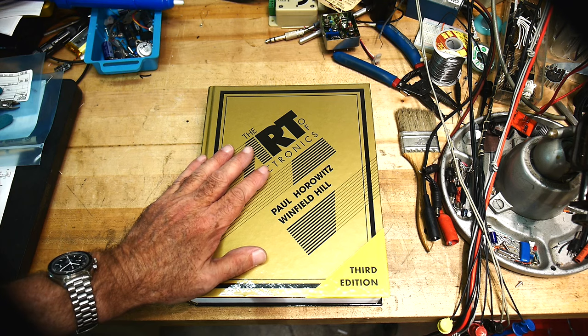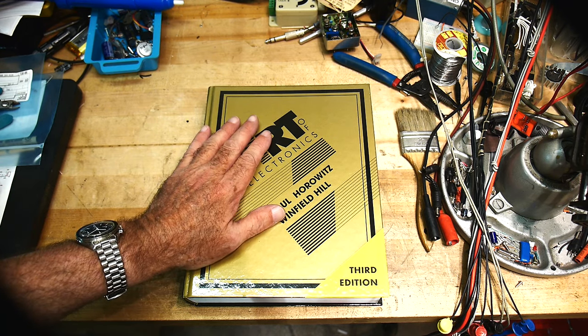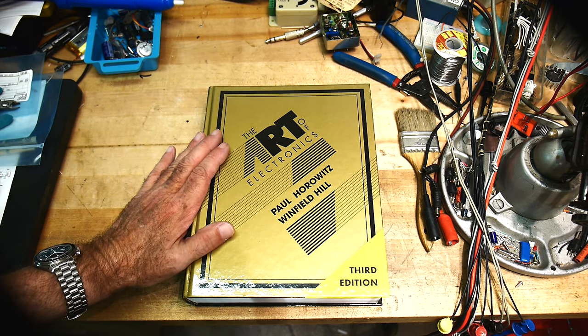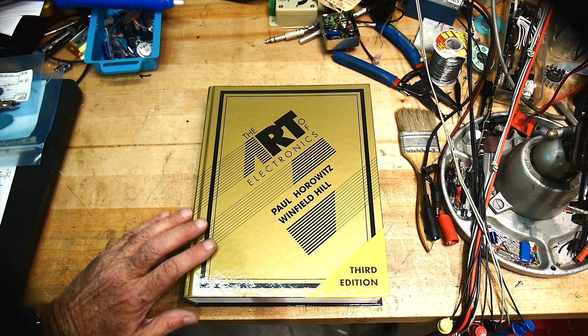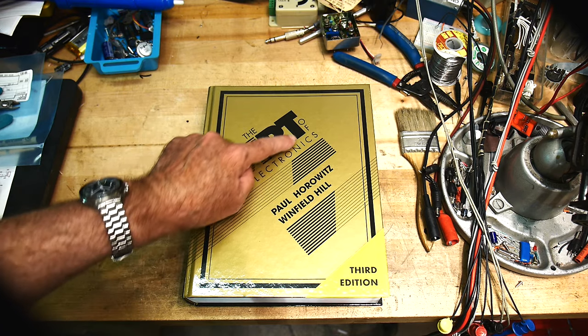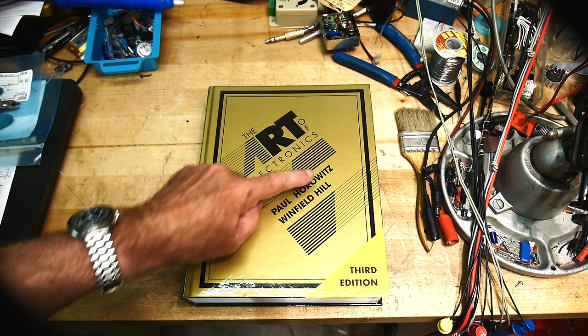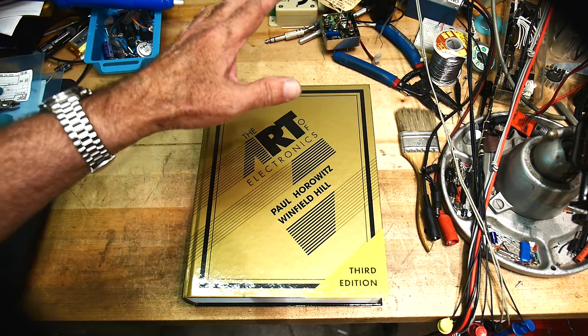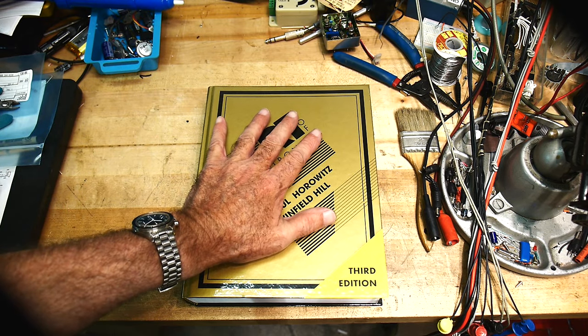This is the Bible. This has all of electronics in it. If you understand this book, you're a superstar. It's got almost every little thing you need to know about electronics. It's called The Art of Electronics by Paul Horowitz and Winfield Hill. And it is great.